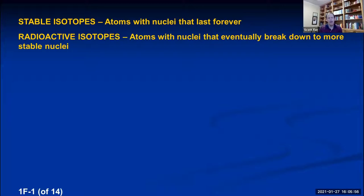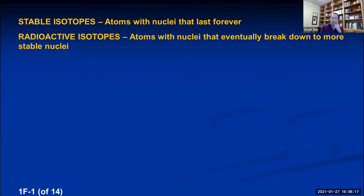Radioactive isotopes are atoms that have nuclei that will eventually break down into stable nuclei — they undergo what's called radioactive decay. There's a little bit of that around you at all times, but not a whole lot. About 99.999% of all the atoms surrounding you right now are stable isotopes, but there are some that are radioactive.